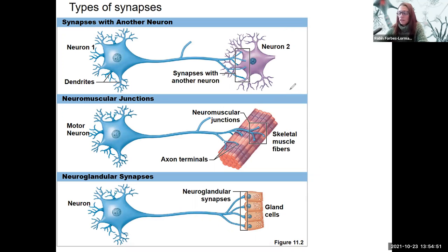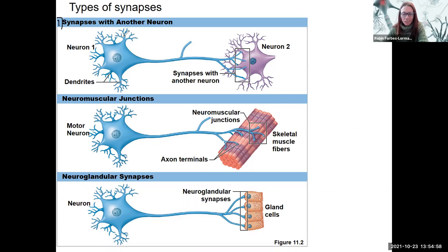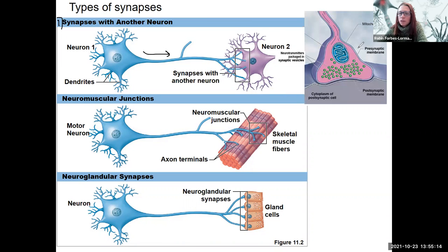Here are the ways that neurons can synapse one with another neuron. Here's neuron one, receiving information, with an electrical signal traveling this way. And we zoom into this location here — we'll see what will be the focus of next week.